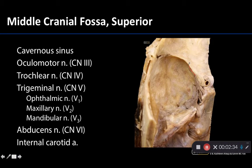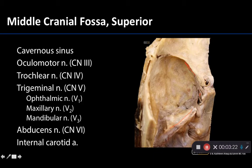Let's get our bearings once more in terms of where the cavernous sinus would have been located. The superior orbital fissure would be here, and here is the apex of the petrous part — so this whole area, if you put the dura back, could house the cavernous sinus. Now with it removed, we can look at the structures running through it. The two key ones are the internal carotid artery — you can see it running through here and popping back out — and the abducens nerve, cranial nerve 6. Both the abducens and the internal carotid artery truly run through the lumen of the cavernous sinus.